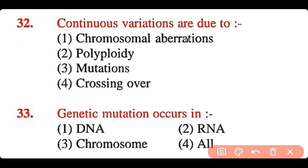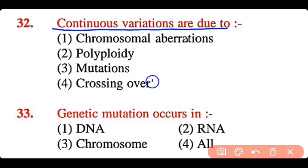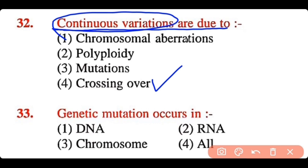Question 32: The continuous variations are due to: chromosomal aberration, polyploidy, mutation, or crossing over. The correct answer is option 4. Continuous variations within organisms occur due to crossing over.